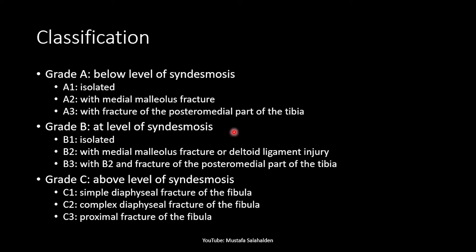Grade B is at the level of the syndesmosis and also has three types. Type 1 is an isolated fracture of the fibula. Type 2 is a fibular fracture with medial malleolus fracture or deltoid ligament injury. And Type 3 is Type 2 combined with a fracture of the posterior medial part of the tibia.